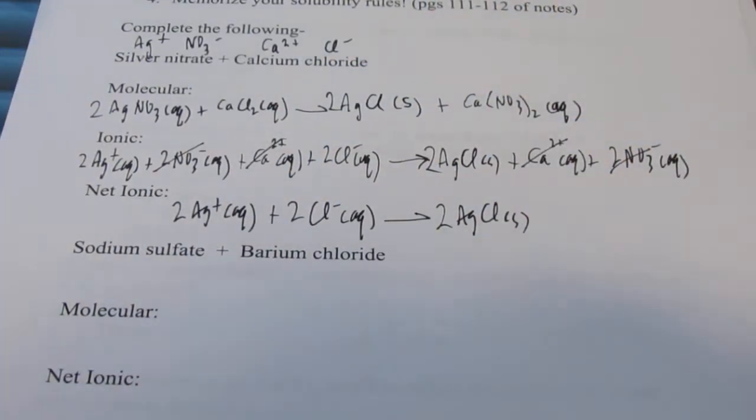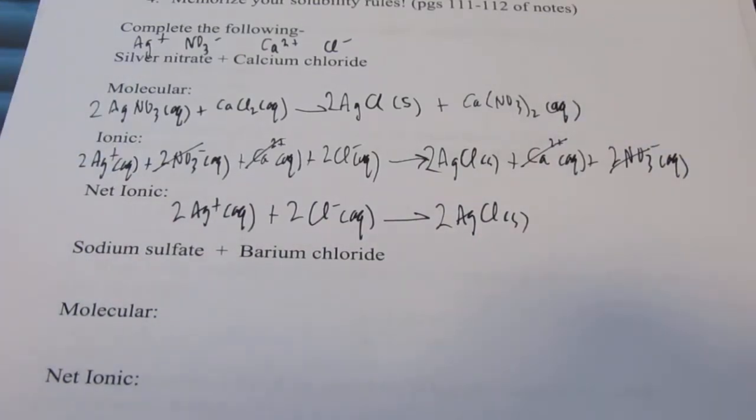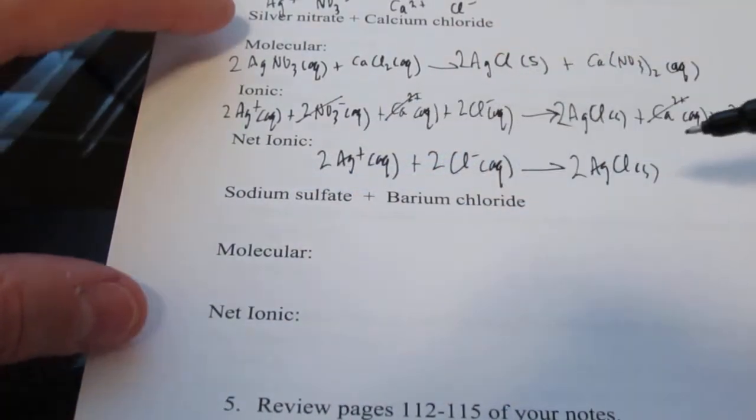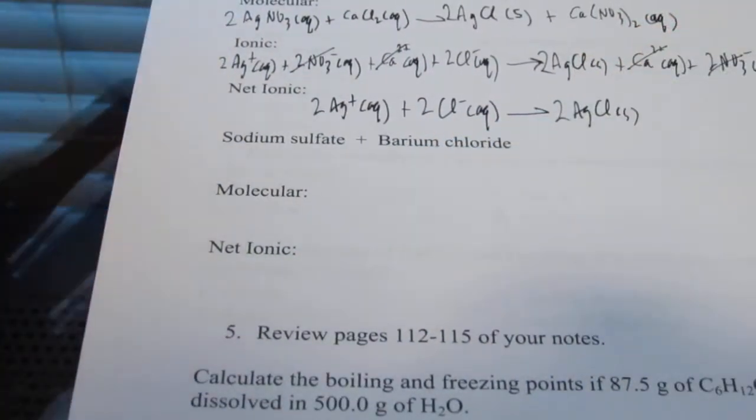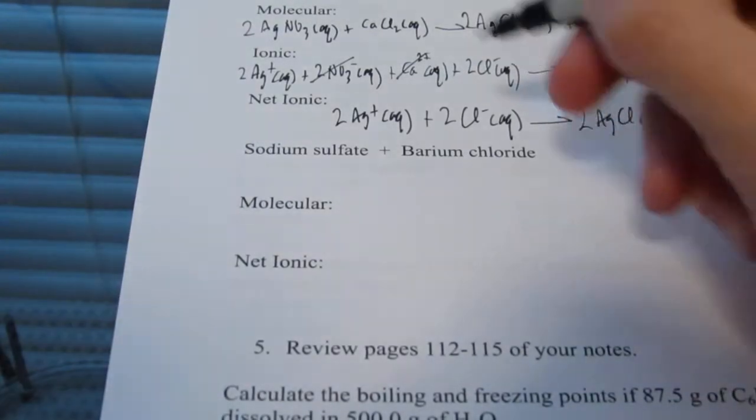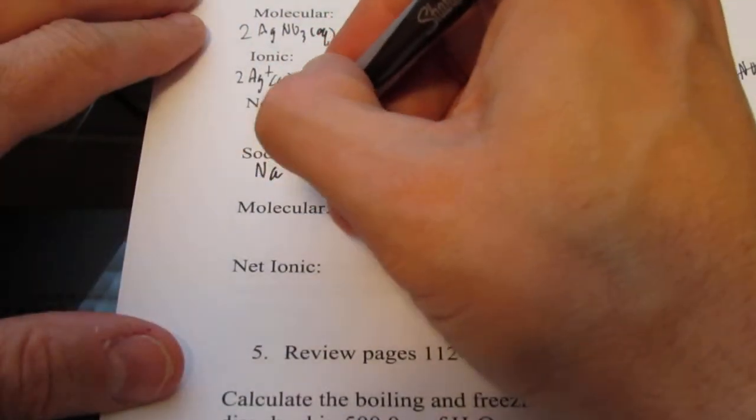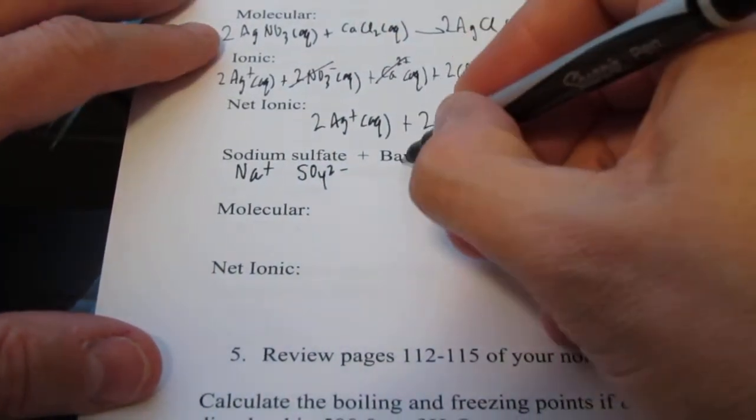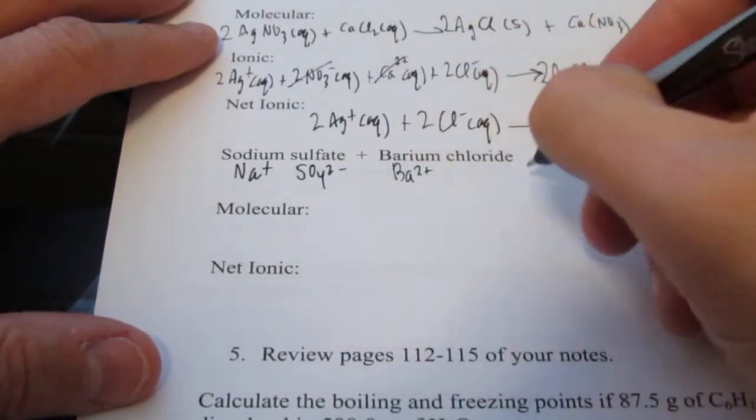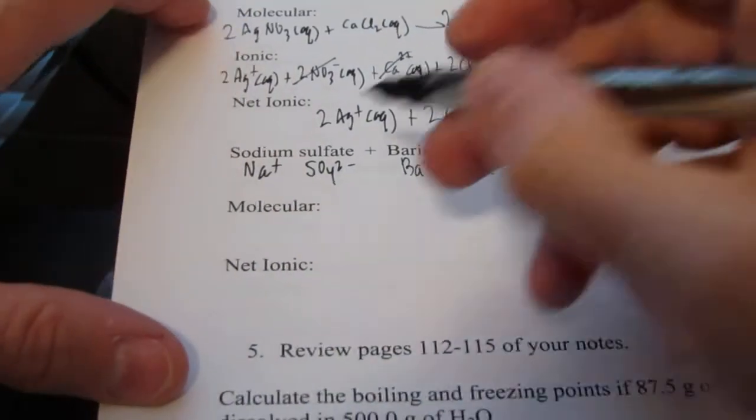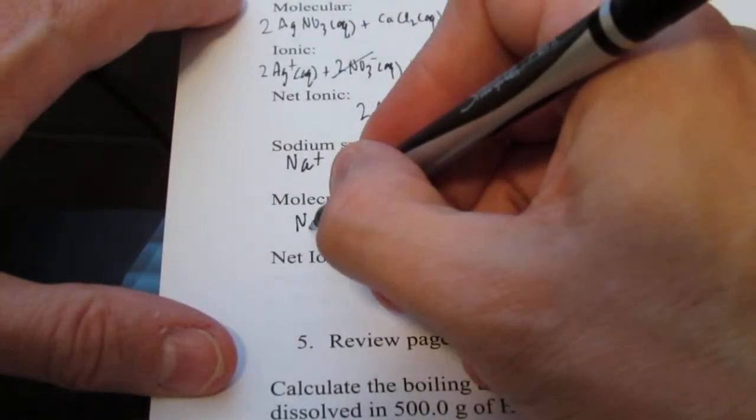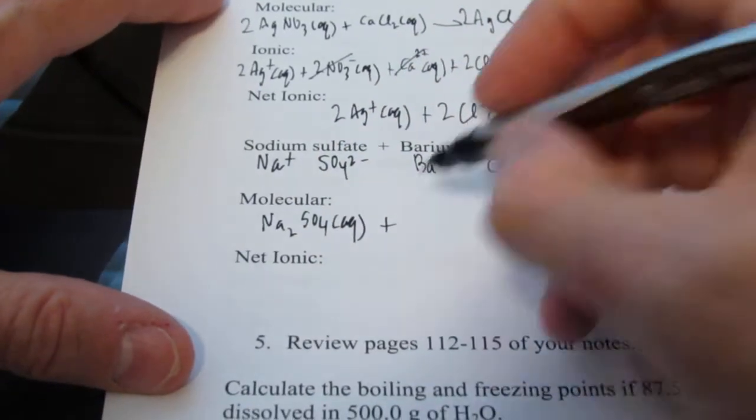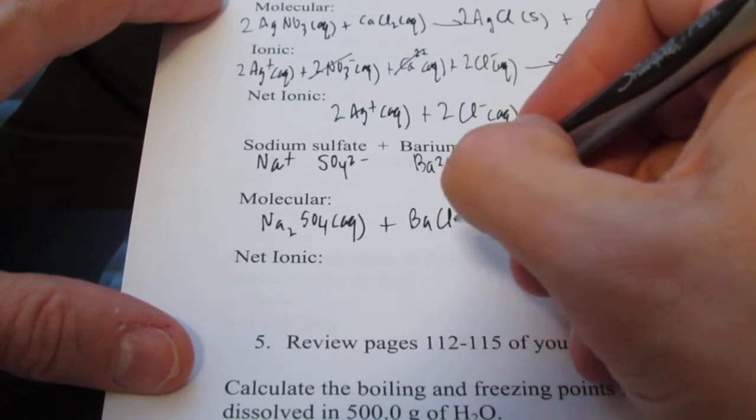Next one: sodium sulfate and barium chloride. Here I just want the molecular and net ionic. Sodium when it forms an ionic bond is Na+, sulfate's a polyatomic SO4 2-, barium is Ba2+, and chloride is Cl-. So sodium sulfate would be Na2SO4 and barium chloride would be BaCl2.